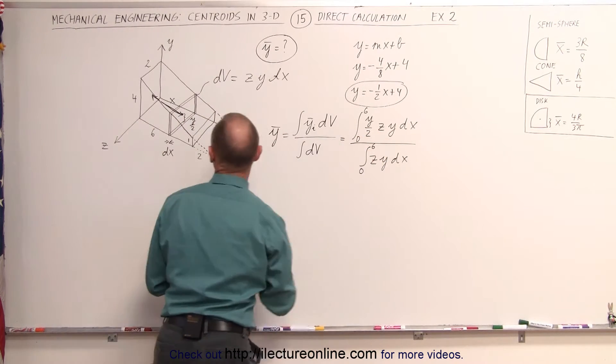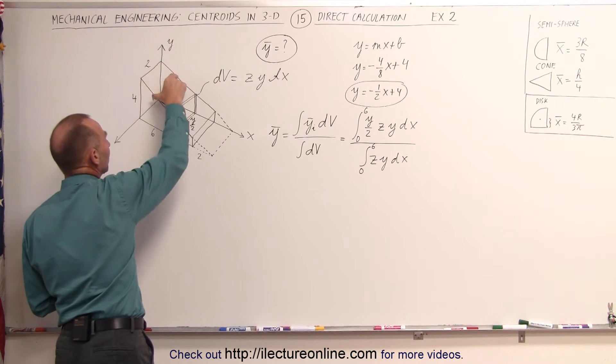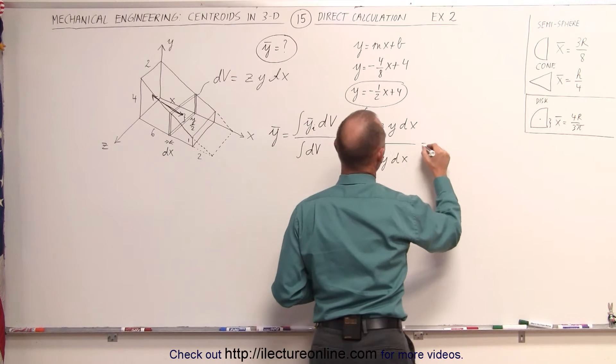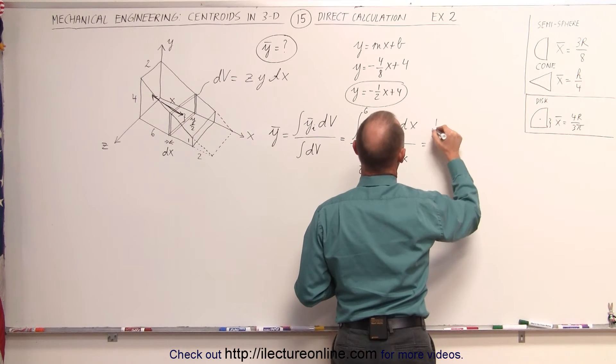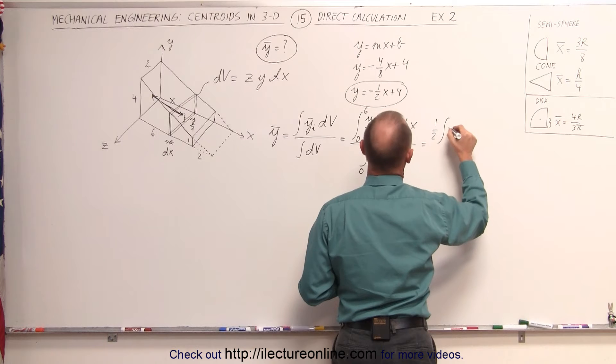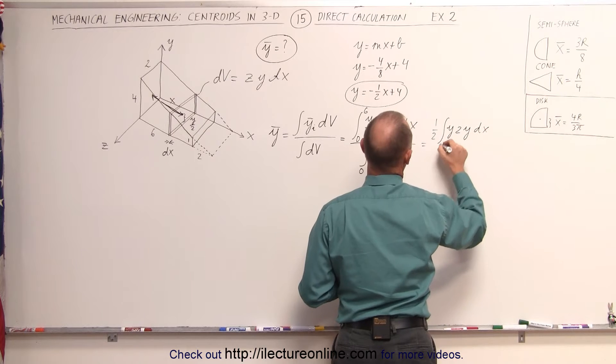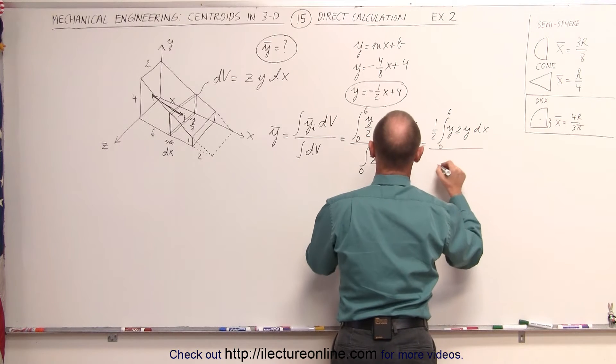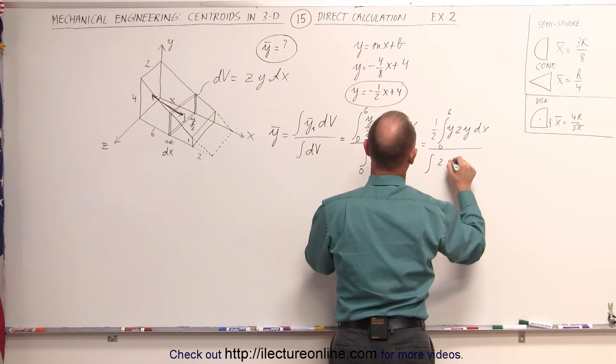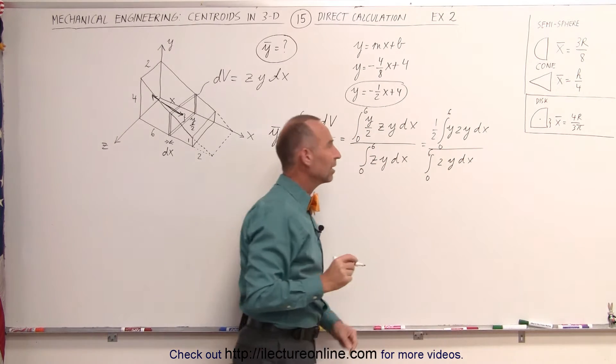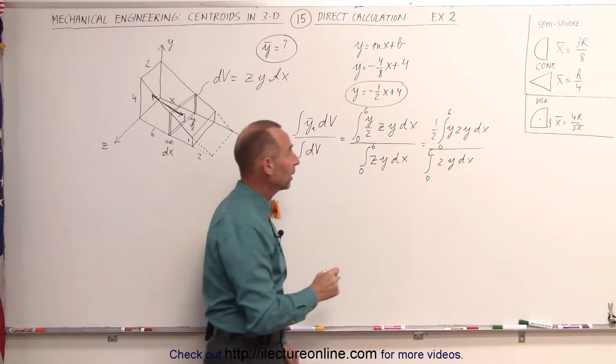Also, z is going to be the constant 2 because the wedge is a constant 2 units wide in the z direction. So this can be written as one-half times the integral of y times 2 times y times dx from 0 to 6, divided by the integral 2 times y times dx from 0 to 6. And then you can see that the 2's cancelled out both in the numerator and the denominator.